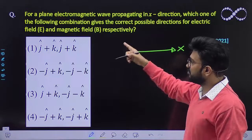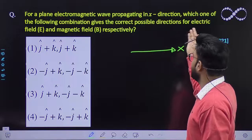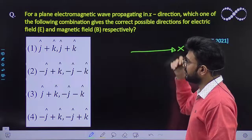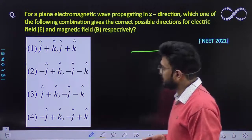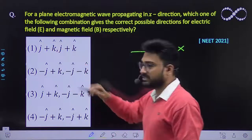Which one of the following combinations gives the correct possible direction of the electric field (E) and magnetic field (B) respectively? First one is electric field and second one is magnetic field.